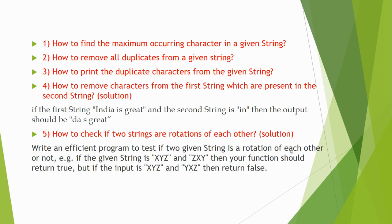The next question is: how to check if two strings are rotations of each other. A simple example — if a string is 'xyz' and 'zxy', then your function should return true. If the input is 'xyz' and 'yxz', then it should return false. We are checking rotation — whether if we rotate the first string we get the second string, or something like that. You need to solve this.